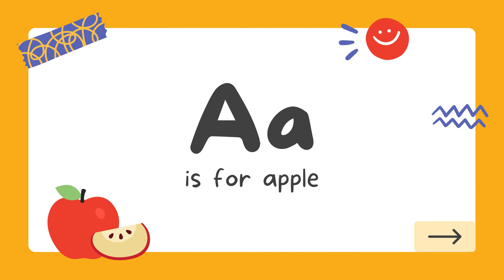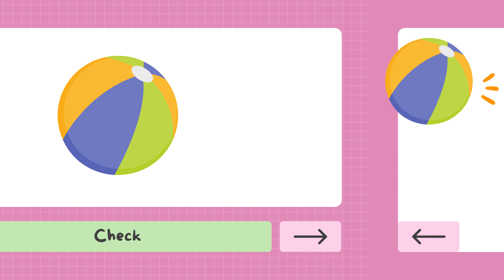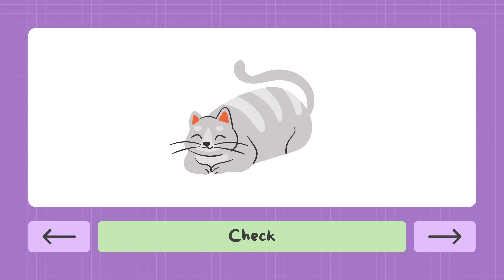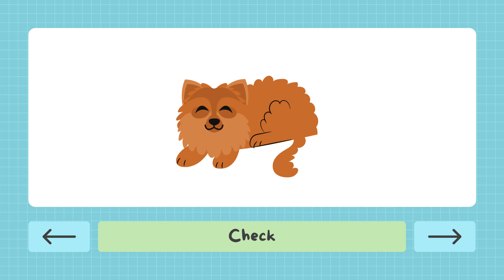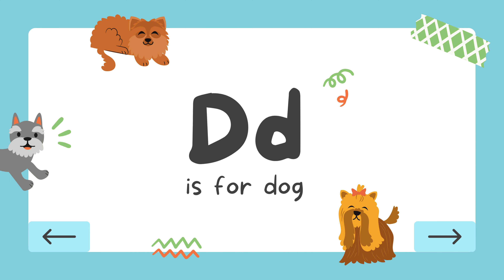A is for Apple. B is for Ball. C is for Cat. D is for Dog.